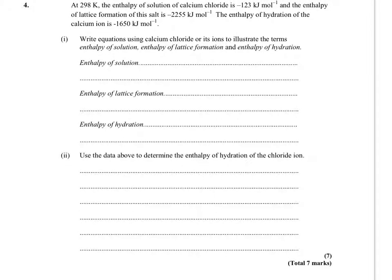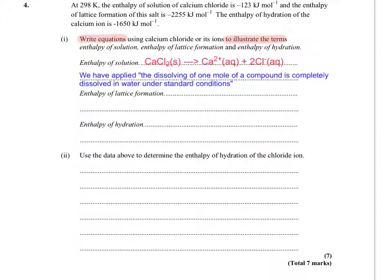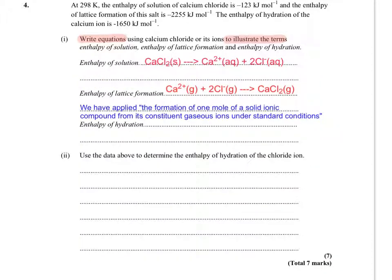At 298K, the enthalpy of solution of calcium chloride is minus 123 kJ per mole, and the enthalpy of lattice formation of this salt is minus 2255 kJ per mole. Then that's the enthalpy of hydration, which tells you, sorry, the enthalpy of hydration of the calcium ion is minus 1650. They want you to write equations, not write it in words, write it in equations. And that's to illustrate the terms. So let's get those down first. So we're writing out that equation. We've applied the standard enthalpy change of solution definition. So the enthalpy of lattice formation. So this time we've used the formation of one mole of a solid ionic lattice, sorry, solid ionic compound from its constituent gaseous ions under standard conditions.